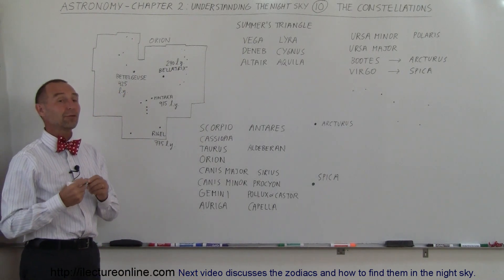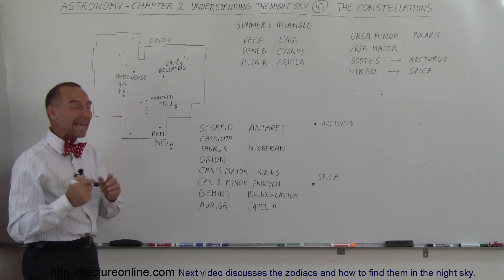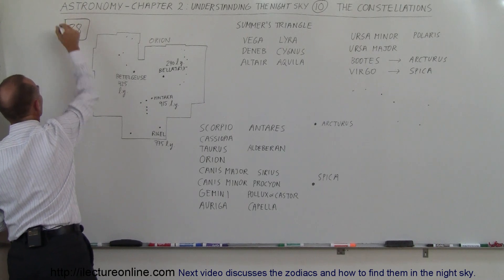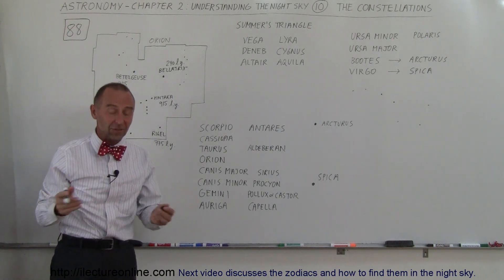So there's only a certain number of them that are visible to us, but in all, 88 constellations do cover the entire sky. Now you may say, why do we still need constellations?